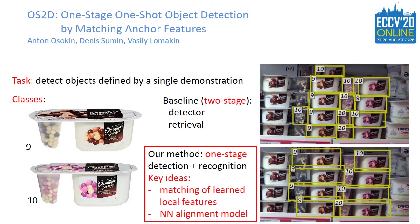We propose a one-stage end-to-end pipeline where detection and recognition are tackled jointly. The key ideas of our method include correlation matching of learned local features and a neural network that aligns the class template at all possible locations.